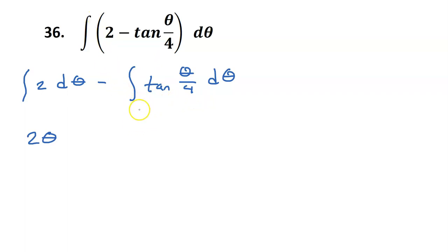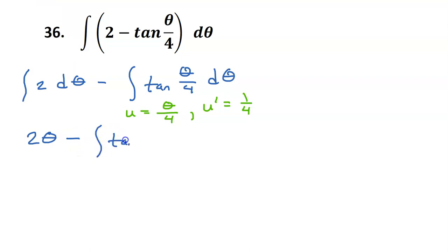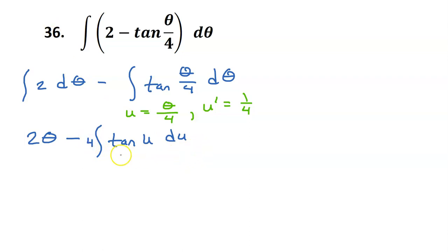Let's go ahead and do a u substitution. We will let u equal theta divided by 4, which means that u prime is going to equal 1 fourth. So we have the integral of tangent u. Instead of d theta we will write du divided by u prime, so that's divided by 1 fourth. When you divide by a fraction you multiply by the reciprocal, so I'm going to put the 4 out in the front. We have our memorized rule that the integral of tangent is going to be negative natural log of cosine u plus c.